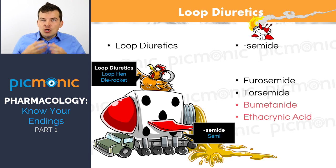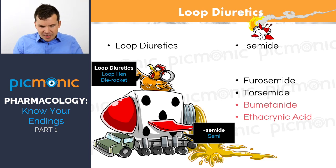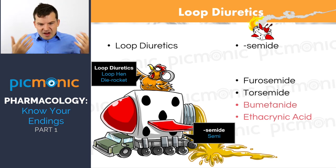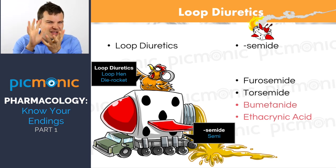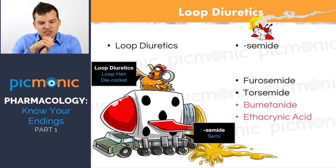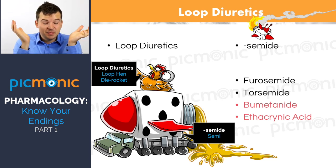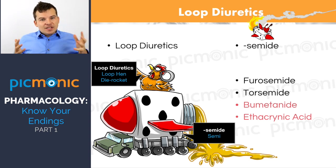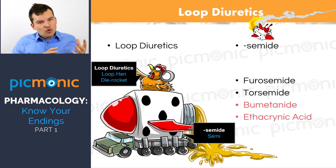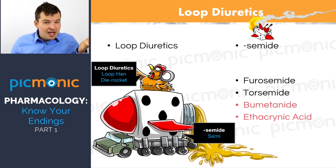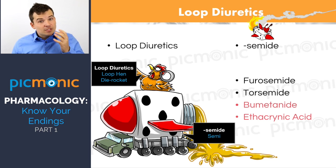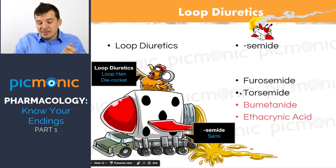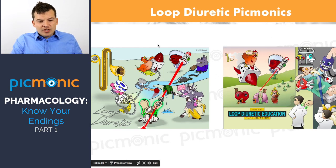Ethacrynic acid has a very different name for an important reason: it's a loop diuretic that can be given to patients with a sulfa allergy, because it contains no sulfa. Standard loop diuretics — furosemide and torsemide — cannot be given to patients with a sulfa allergy. This is a very common exam question.